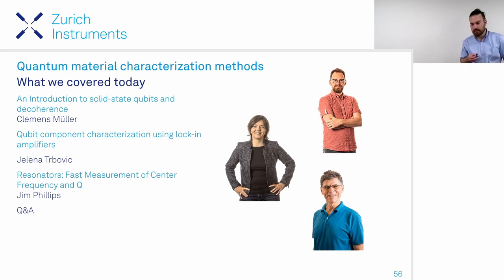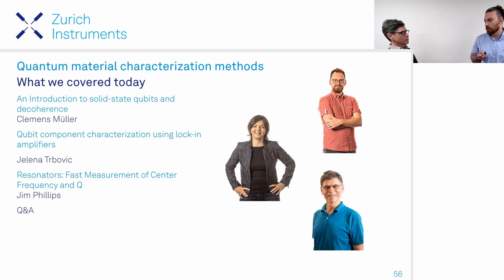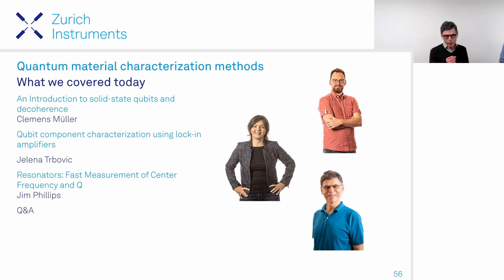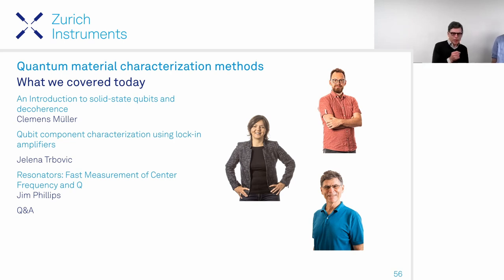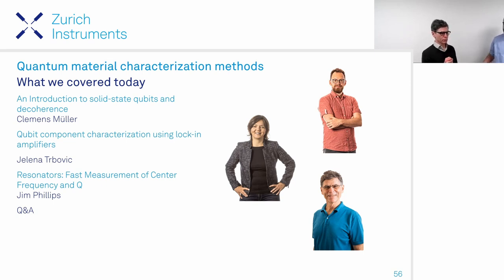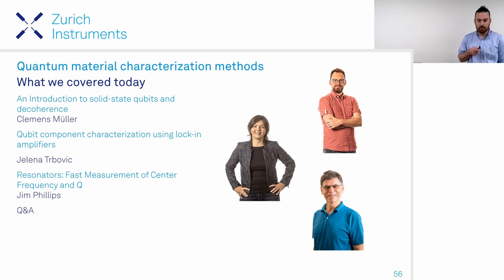For Jim: Zurich Instruments lock-in amplifiers cover carrier frequencies up to 600 MHz, with measurements down to millihertz or below. For Q factor, there is no fundamental limit except that very high Q requires waiting out the inverse linewidth timescale. Thank you all for joining and for the great questions. Remaining questions will be answered in a follow-up blog post.